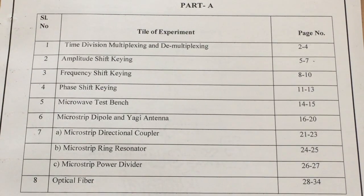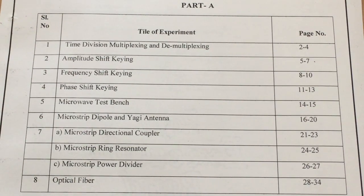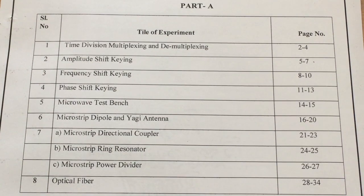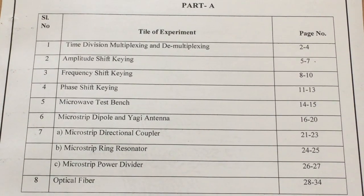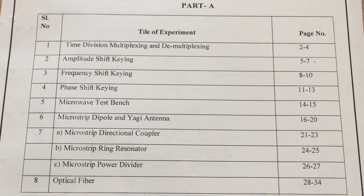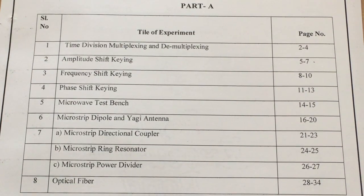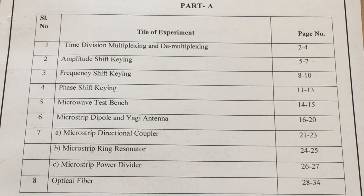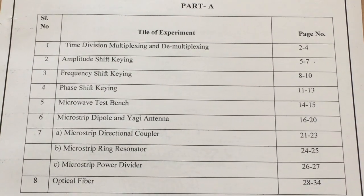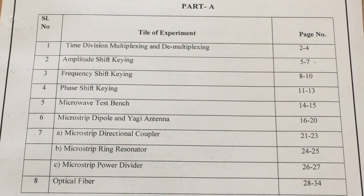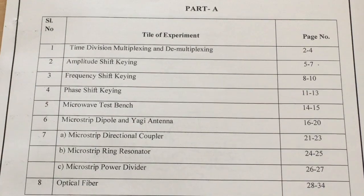The Part A experiments are: Time Division Multiplexing and Demultiplexing, Amplitude Shift Keying, Frequency Shift Keying, Phase Shift Keying, Microwave Test Bench, Microwave Dipole and Yagi Antenna, Microstrip Directional Coupler, Microstrip Ring Resonator, Microstrip Power Distributor, and finally Optical Fiber Communication.